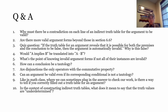Q10: In constructing indirect truth tables, what does it mean for truth values to be underdetermined? It means we don't have enough information to fill in the rest of the line, which is how we end up needing additional lines. We'll stop there for today, and on Wednesday we'll move on to chapter seven.